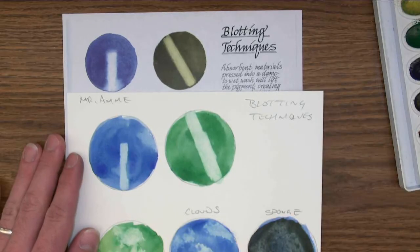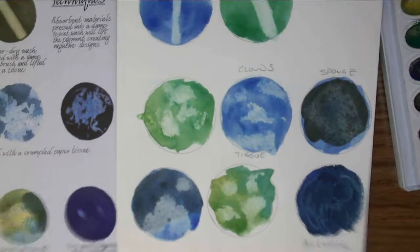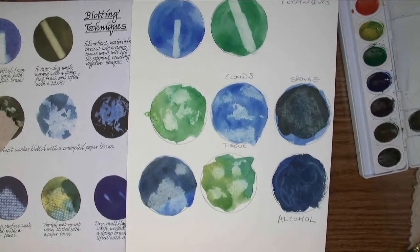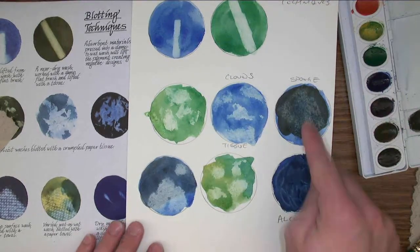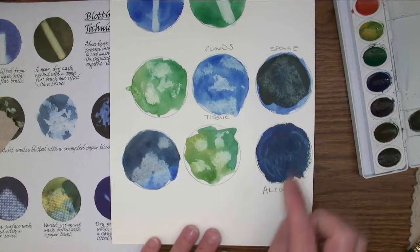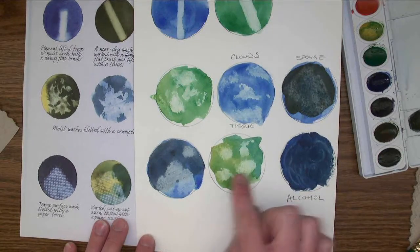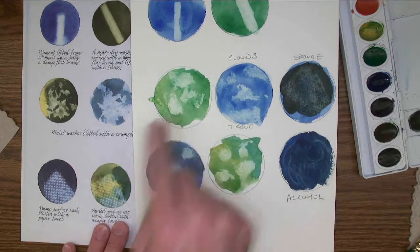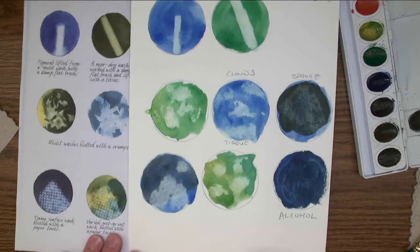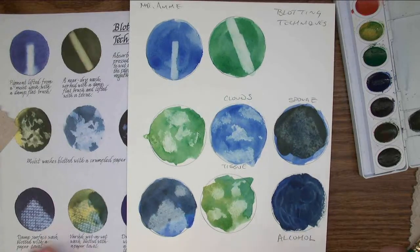That gives us those interesting blotting techniques. Created clouds, got sponge texture, alcohol texture, varied textures, paper towels, moist washes blotted with a paper towel. And that gives you the last of the four techniques.